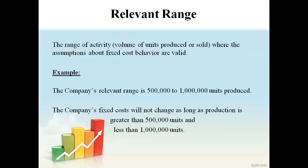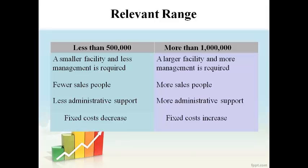Let's talk a little more about the relevant range. The assumption that total fixed cost will not change when volume changes is only valid when the range of activity is within the relevant range. The relevant range indicates the minimum and the maximum volume of products that can be made without changing the fixed cost. In this example, the relevant range is between 500,000 and 1 million units produced. When the volume drops below 500,000 units, the company can reduce their fixed cost by moving to a smaller facility, employing fewer salespeople, or reducing administrative support. When the volume exceeds the relevant range, the company must expand and increase fixed costs to support the higher volume of products made and sold.